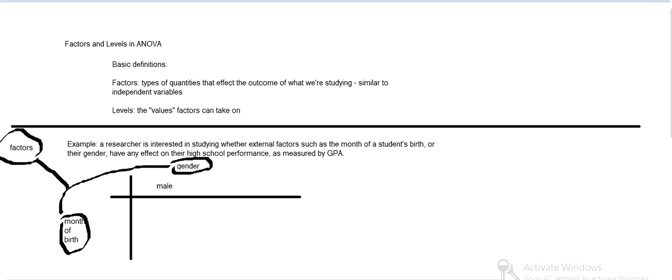And then inside the factors, for gender, there's male and female. Then for month of birth, January, February, up to December.